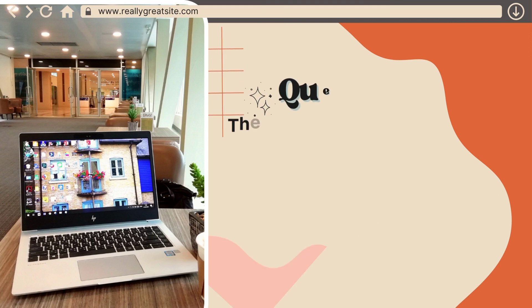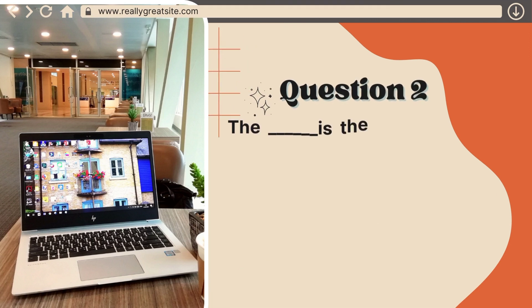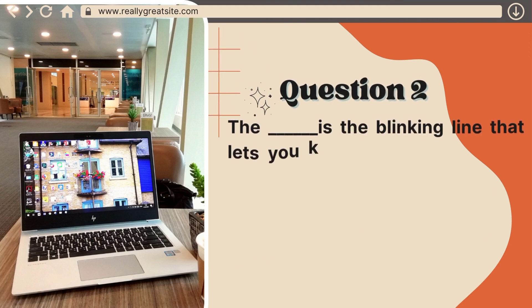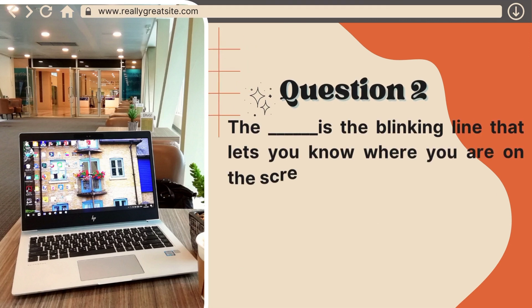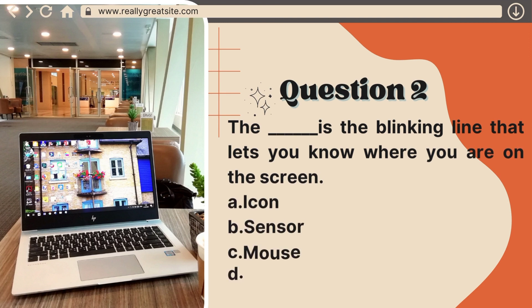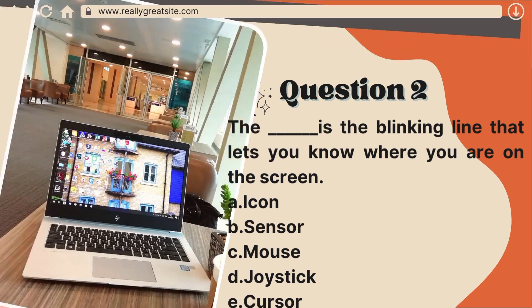Number two: the dash is the blinking line that lets you know where you are on the screen of the computer. When you are working on the computer you see a line blinking — that line is called the cursor.